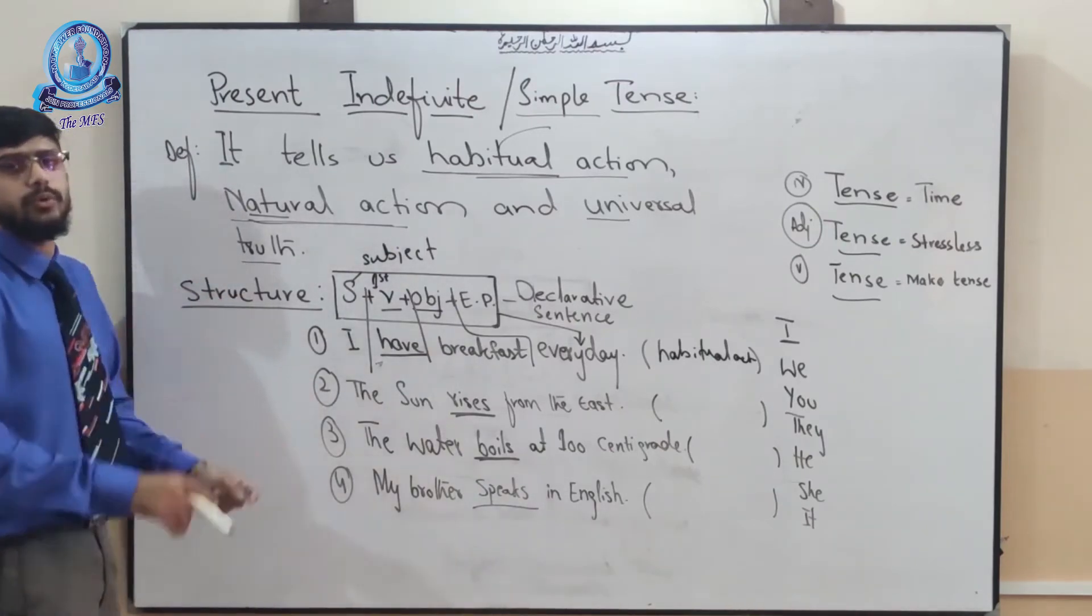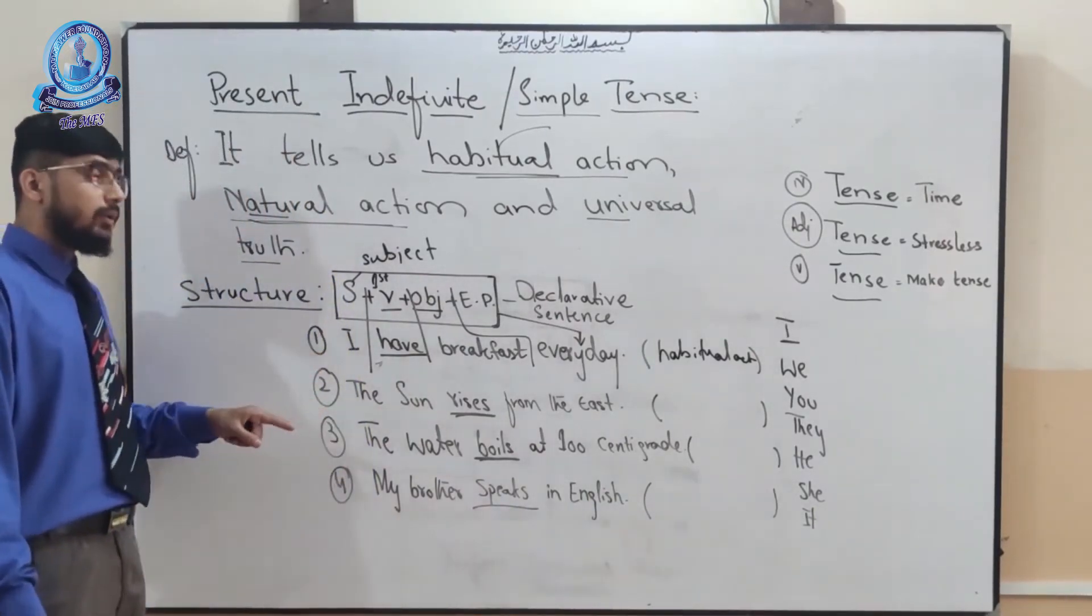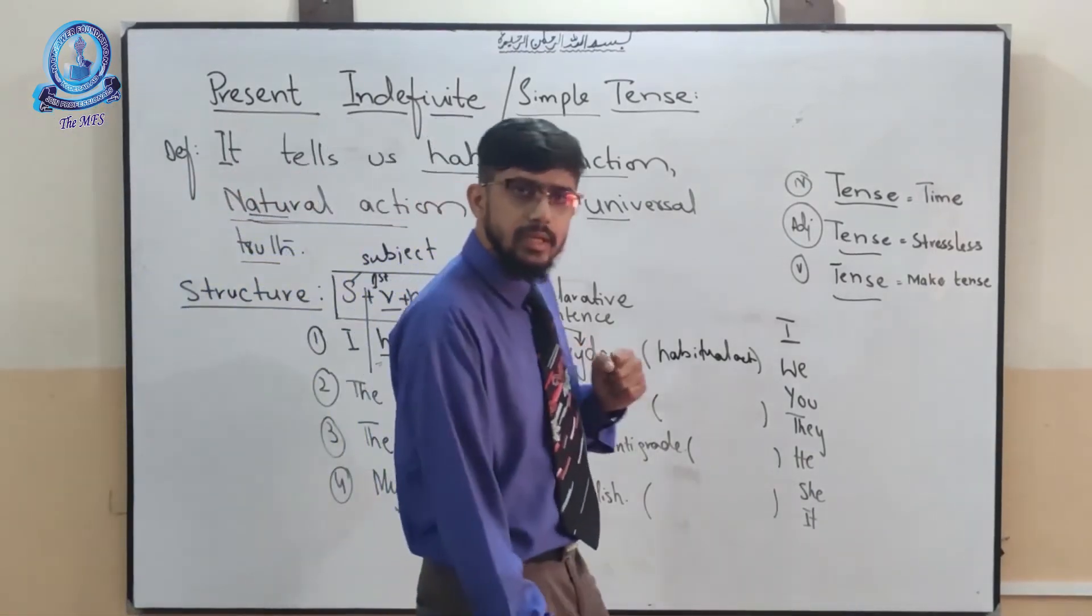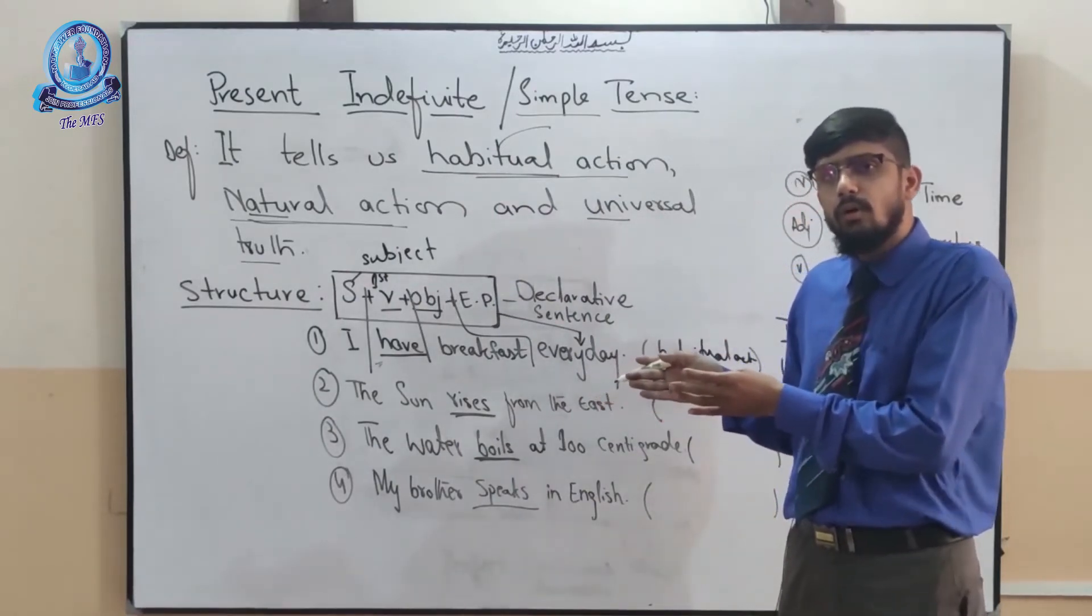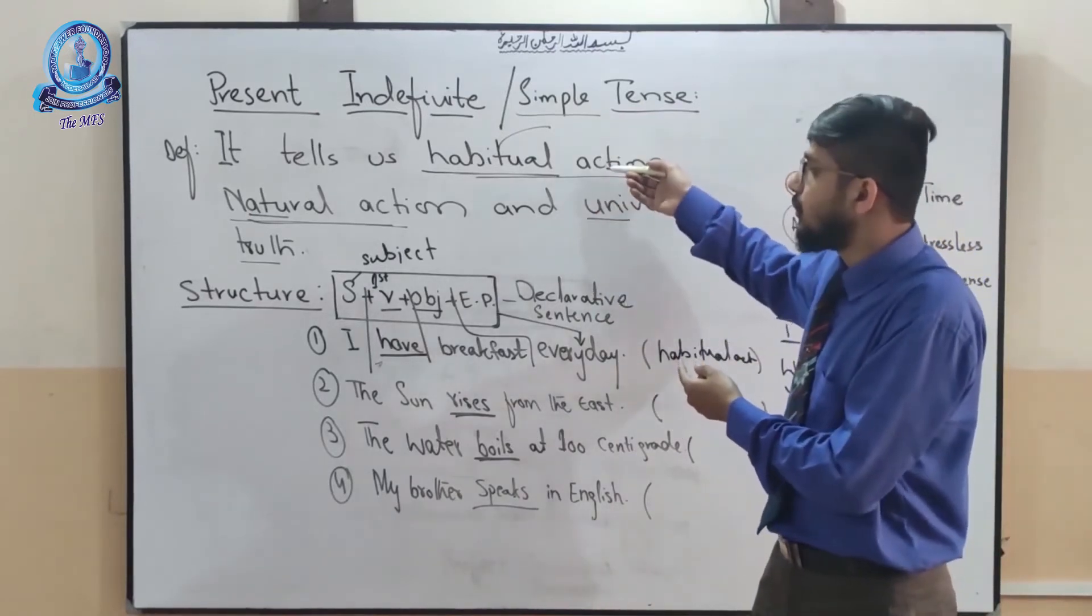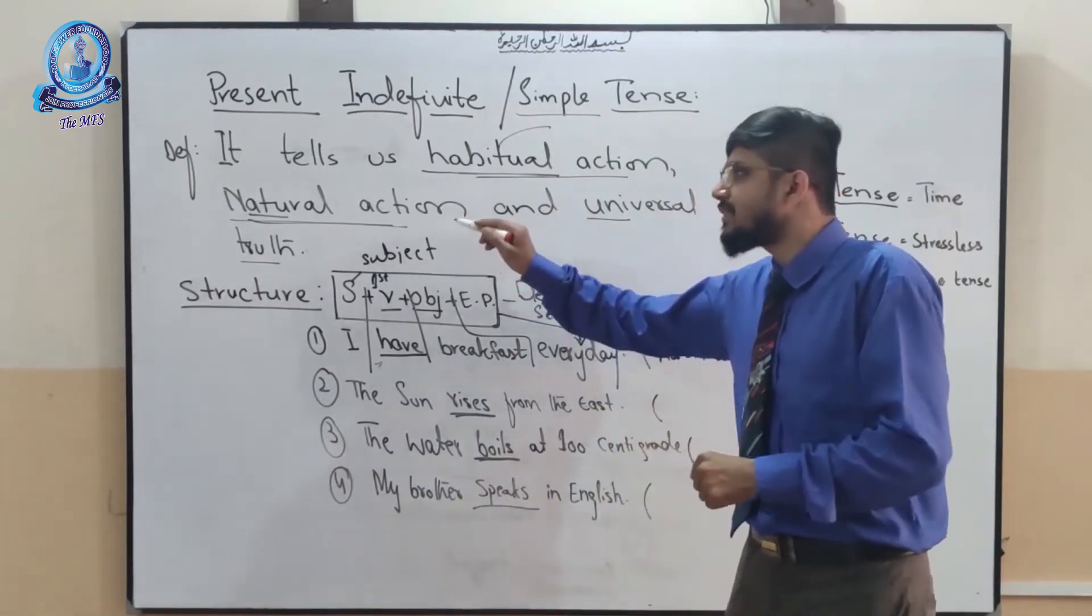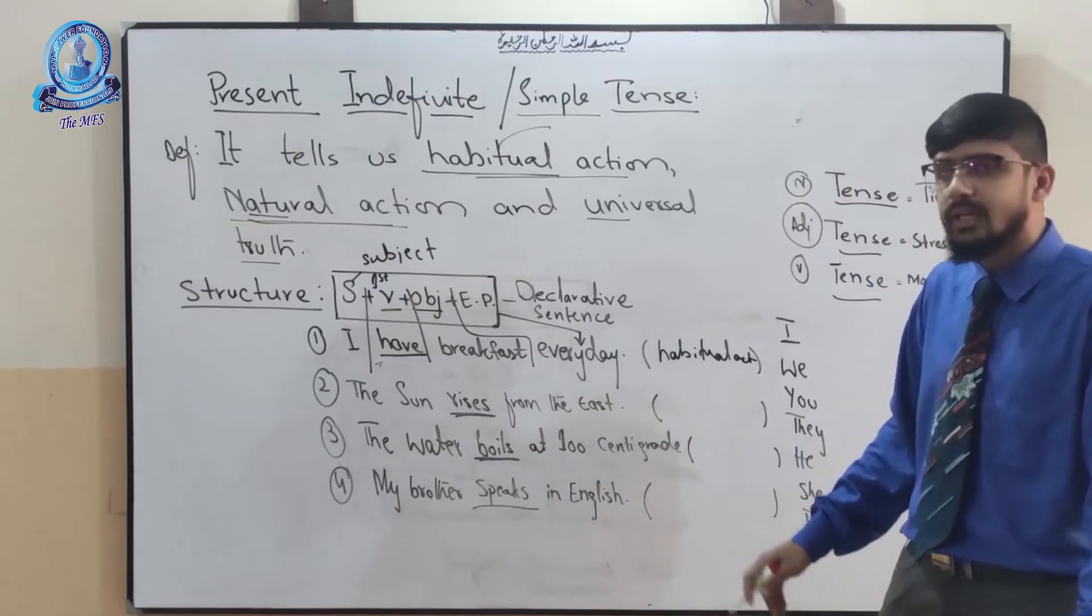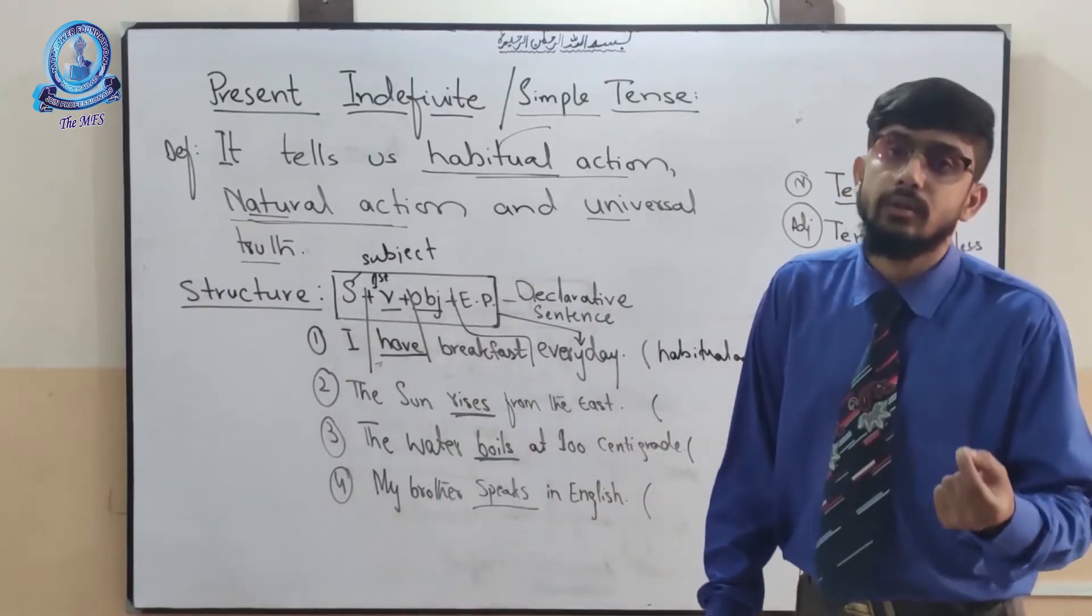Let's come towards the second sentence. The second sentence is, the sun rises from the east. This is the second example of an action. What kind of an action? Natural action, habitual action, or universal truth? What do you say? Oh, I cannot hear you. Sorry. So this is natural action. Yes, it is natural action. The sun rises. Why it is natural action? Because its doer is the God.